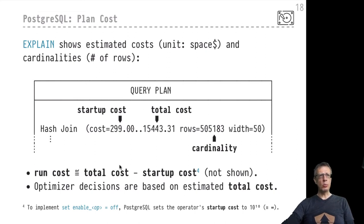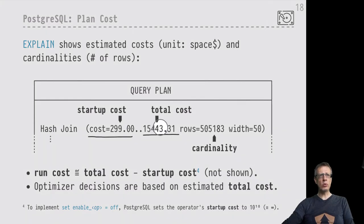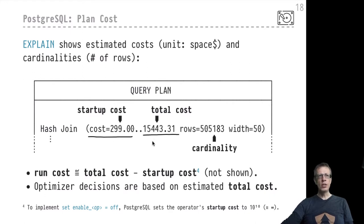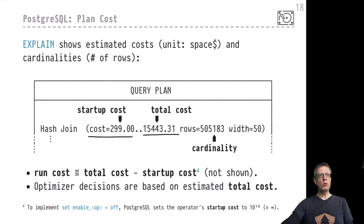To remind you how cost annotations appear in EXPLAIN output: EXPLAIN shows costs in a range starting with the startup cost — the time until the first row is produced — and the total cost, which drives our plan selection decision. This is in units of space dollars, not milliseconds. Please don't confuse this with EXPLAIN ANALYZE output, which additionally lists actual times to produce the first and last rows — those are measured in real milliseconds.